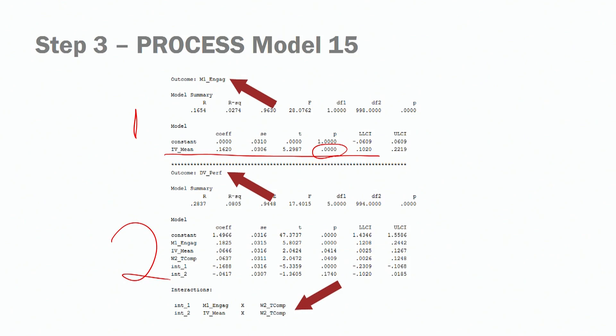The second step looks at the interaction terms and their effects on the dependent variable. We have two interaction terms because we chose model 15 — we are controlling for the effects of an interaction term on the dependent variable. Interaction term 1 is job engagement and task complexity. Interaction term 2 is meaningfulness and task complexity. We want to see that interaction term 1 has a significant relationship with task performance — and we do find that, p is less than 0.05. Interaction term 2 is the control interaction term and it is not significant.